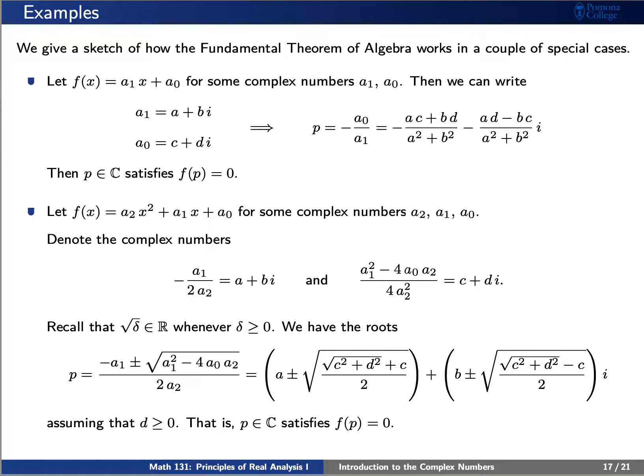Let me point out that because c and d are real numbers, the square root of c squared plus d squared is also a real number. And actually, this real number is greater in absolute value than the real number c. This means that the square root of c squared plus d squared minus c is also a positive real number, so the square root of c squared plus d squared minus c divided by 2 is also a real number. So what you see here, defining p, is indeed a complex number satisfying f of p equals 0. Thanks very much for watching.